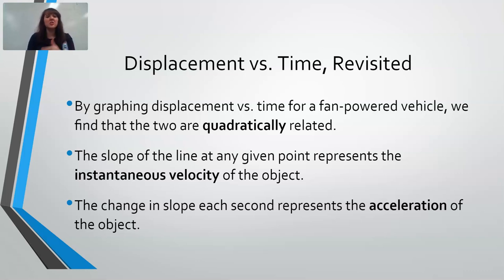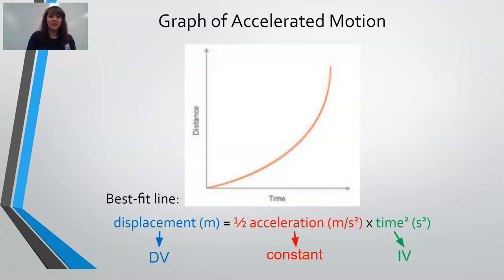If we look at that change in slope each second or the change in velocity each second, we can figure out the acceleration of our object. So we ended up with a graph with this curve upwards, this half of a parabola. And our best fit line gave us the formula that displacement is equal to one half of the acceleration times time squared.